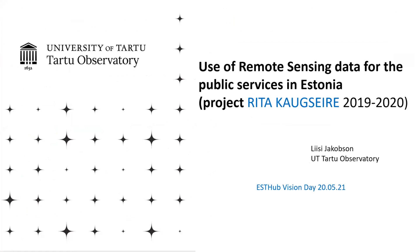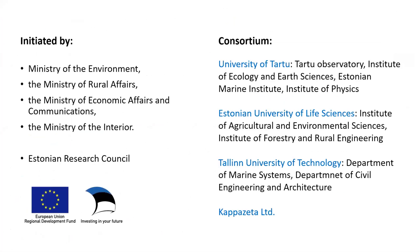I will briefly talk about the project that we were leading the last two years. The aim of the project was to find ways how to improve the use of remote sensing data for the public service in Estonia. It was initiated by four ministries, which all had their own important themes they wanted scientists to investigate. The project was funded by the Estonian Research Council. We had scientists from three different universities, and one of the parties was a private enterprise, Kappa Zeta. All in all, we had nine working groups and four themes or work packages.